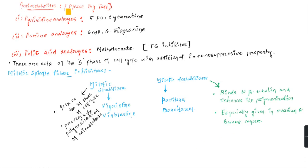Anti-metabolite class: PPF - P for pyrimidine analogs, P for purine analogs, F for folic acid analogs. These are cell cycle-specific drugs acting on the S phase. Pyrimidine analogs include 5-fluorouracil and cytarabine. Purine analogs include 6-mercaptopurine and 6-thioguanine. Folic acid analogs include methotrexate, which inhibits thymidylate synthase. These drugs also have immunosuppressive properties.